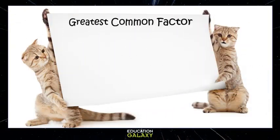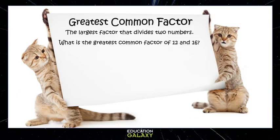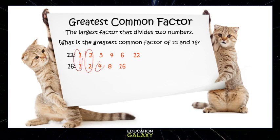The greatest common factor is the largest factor that divides two numbers. What is the greatest common factor of 12 and 16? Let's list the factors of 12: 1 and 12, 2 and 6, and 3 and 4. Now the factors of 16: 1 and 16, 2 and 8, and 4 and 4. They have a few common factors: 1, 2, and 4. The greatest is 4, so the greatest common factor of 12 and 16 is 4.